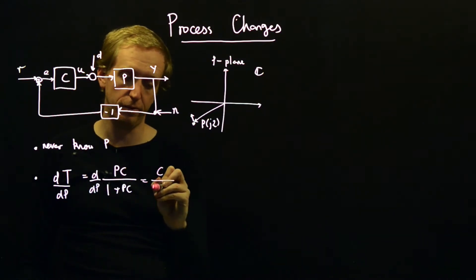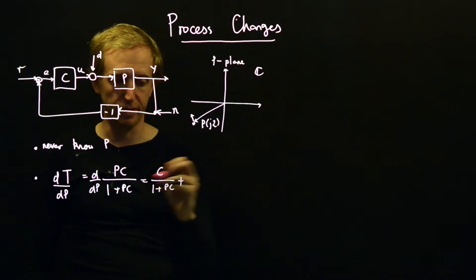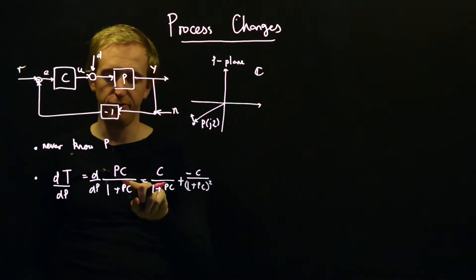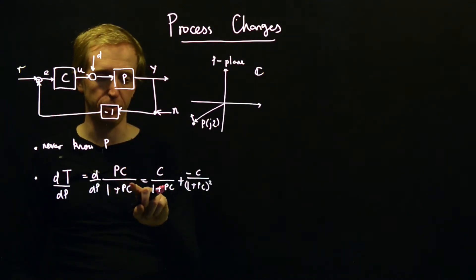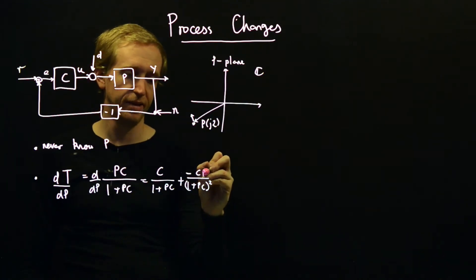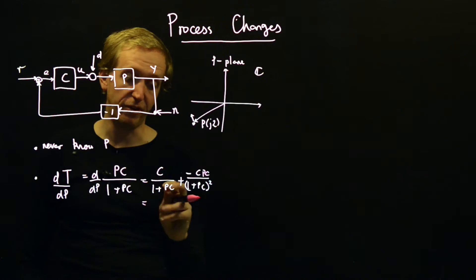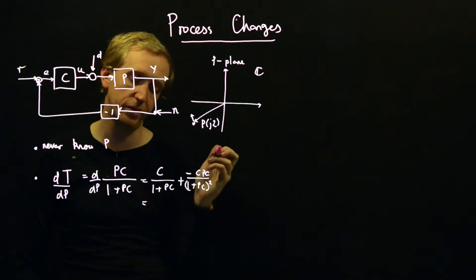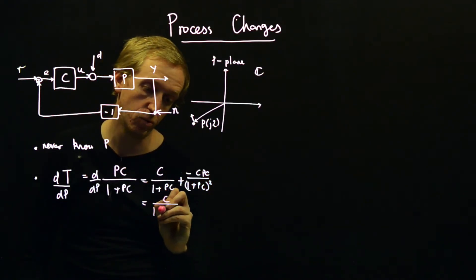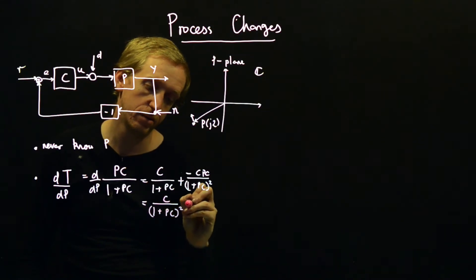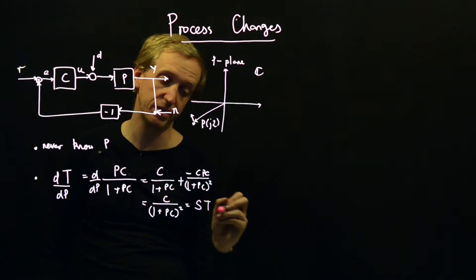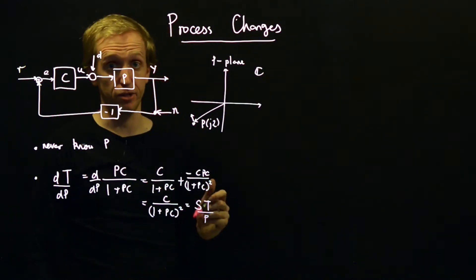What do we get? We get C over 1 plus PC plus minus C over 1 plus PC squared. So first differentiate the top holding the bottom constant, then differentiate the bottom holding the top constant. There must be a PC in here. And if I multiply this out, well, if I increase the power of the denominator here, in the numerator I'll get 1 plus PC squared, but then I'm minusing PC squared. So this whole thing is just going to be C over 1 plus PC squared, which is actually equal to the sensitivity function multiplied by the complementary sensitivity function, all divided by P.